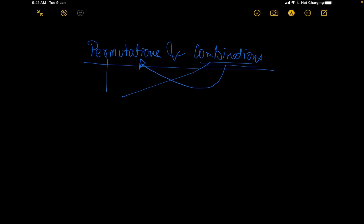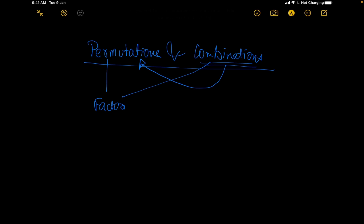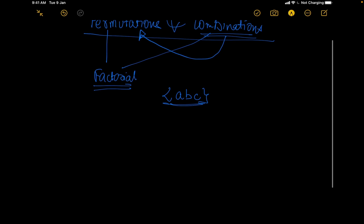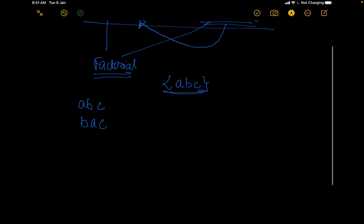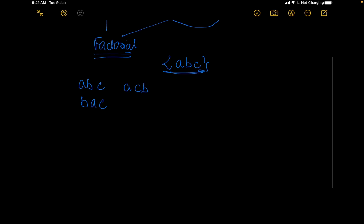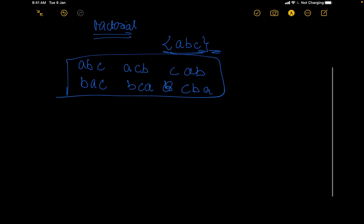In order to understand permutations and combinations, let us first talk about factorials. A factorial is basically the number of ways in which you can represent a set. Let us say I give you a set of n elements — here n is 3, so we have a set of 3 elements {a, b, c}. In how many ways can you represent this? You can have a,b,c or b,a,c or a,c,b or b,c,a or c,a,b or c,b,a — a total of 6 ways.